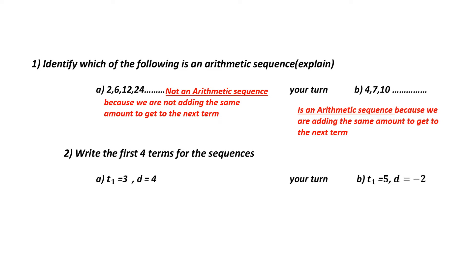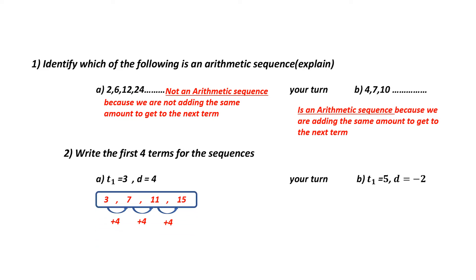Number 2: write the first 4 terms in the sequence. What do I know? My first term, or T to the 1, is 3. My common difference is 4, so I'm going to add 4, which gives me 7 — that's my second term. I add 4 again to get 11 — my third term. And finally, I add 4 one last time to give me 15. Those are my first 4 terms in the sequence.